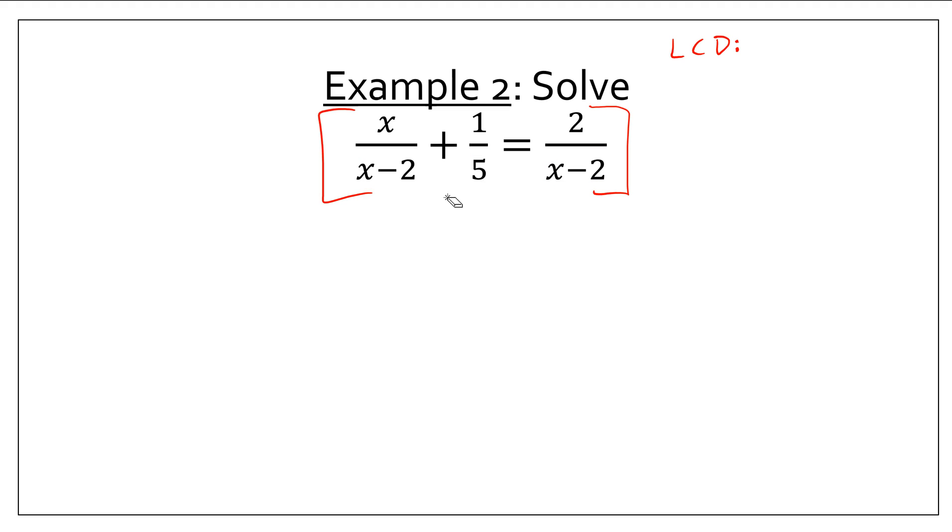The least common denominator for these sorts of fractions is a little more tricky. Remember, you want to get all of the denominators to cancel. So, you have to include everything that's in the denominator. So, I'm going to include this x minus 2. That's going to be in my least common denominator. I'm going to include this 5. That's in my least common denominator. And I don't need to include an extra x minus 2 because I've already included it. So, my least common denominator is x minus 2 times 5.